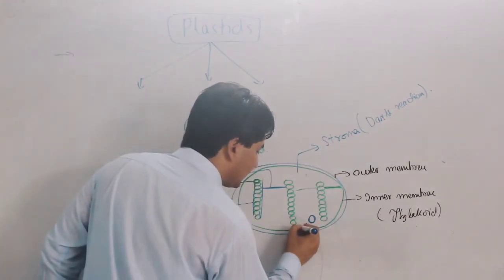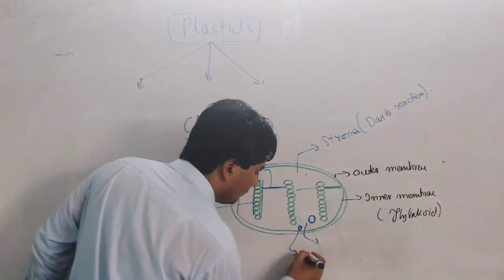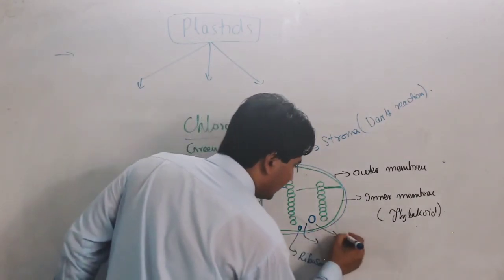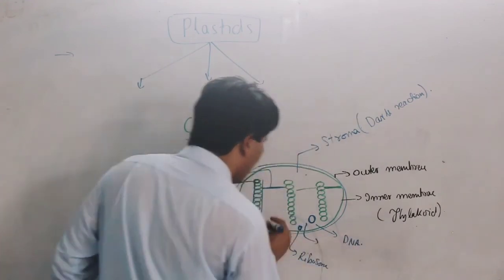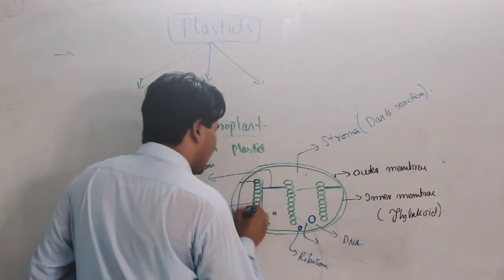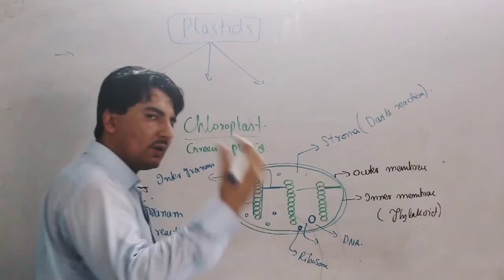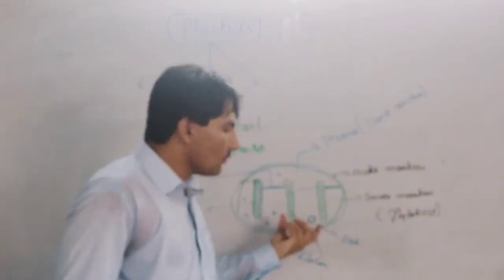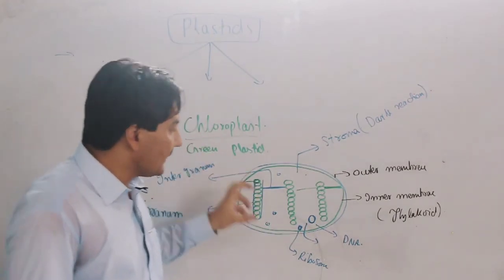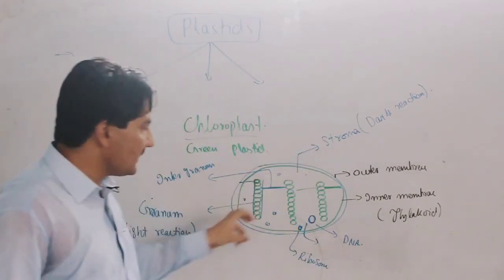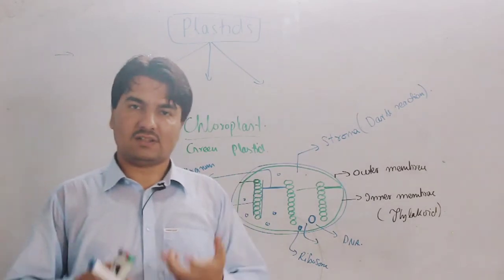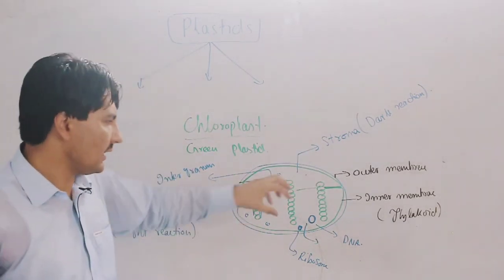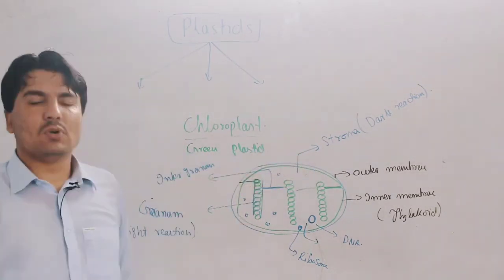In addition, the chloroplast has its own DNA and ribosomes. Here ions are present, salts, water, and enzymes are all found in the stroma. All the enzymes and molecules required for these processes are present in the stroma.